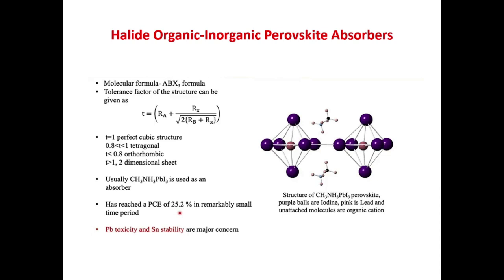This tolerance factor is very important. For perfect cubic, T equals 1, and if T is between 0.8 to 1, it will be a tetragonal structure. If T is less than 0.8, it will not be a 3-dimensional structure - it will be a 2-dimensional structure, meaning we have layers of organic and inorganic molecules.